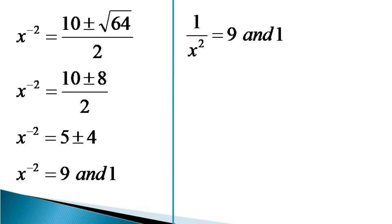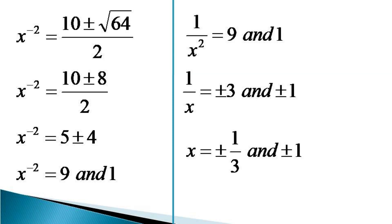Taking the square root of both sides, the solution becomes 1 by x equals plus or minus 3 and plus or minus 1. Taking the reciprocal of both sides, the value of x comes out to plus or minus 1 by 3 and plus or minus 1.